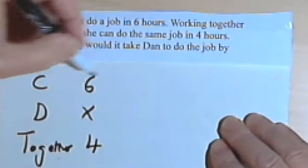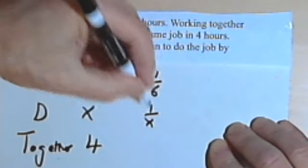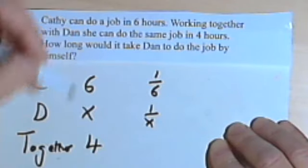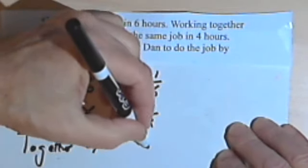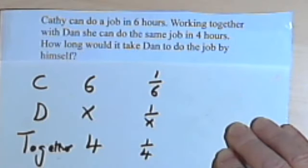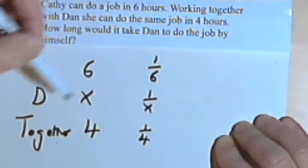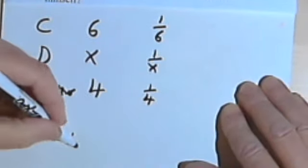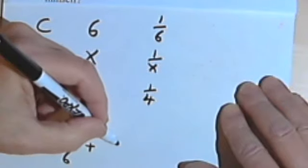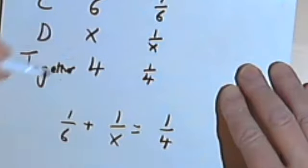So in one hour, Kathy can do one-sixth of the job. In one hour, Dan can do one over x of the job. And working together, they can do one-quarter of the job in one hour. So I'm going to combine Kathy's, the amount of work Kathy does in an hour and the amount of work Dan does in an hour. One-sixth plus one over x equals one over four.